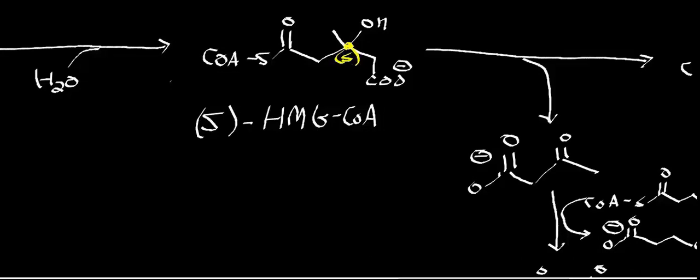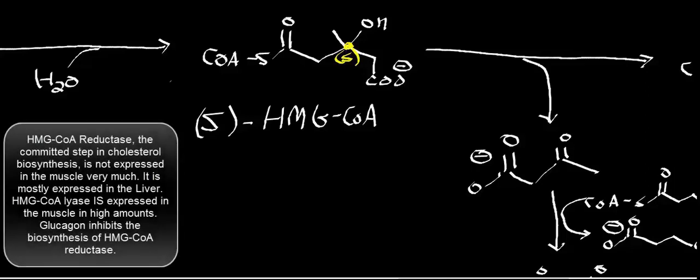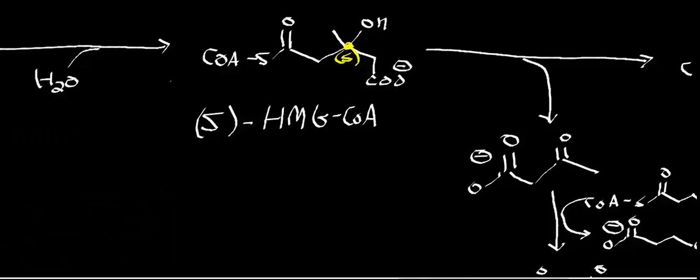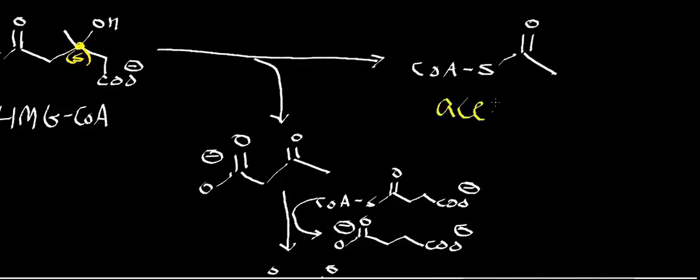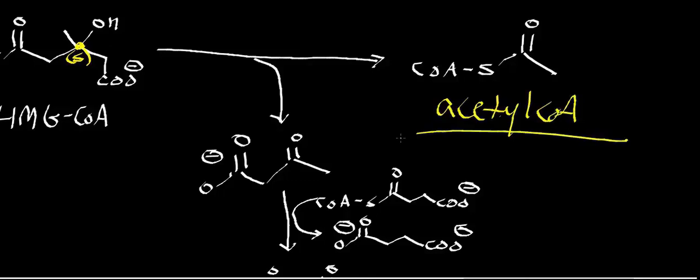HMG-CoA has multiple routes it can go through. If you're doing anabolic processes, that's not the time for amino acid catabolism — insulin generally drives cholesterol biosynthesis, whereas glucagon stimulates amino acid catabolism. So when glucagon is present and blood sugar is low, HMG-CoA is going to react with hydroxymethylglutaryl-CoA lyase, giving you two products: acetyl-CoA and acetoacetate.